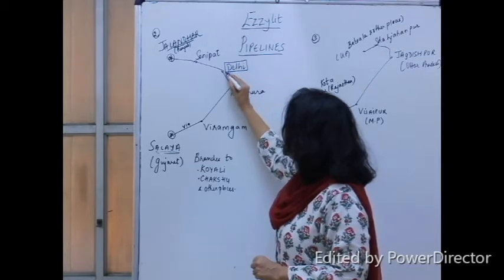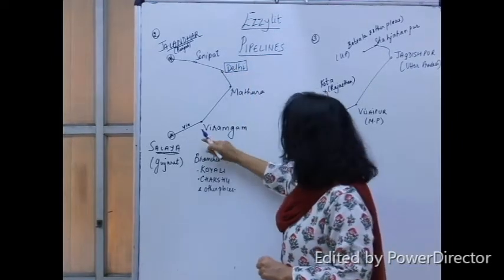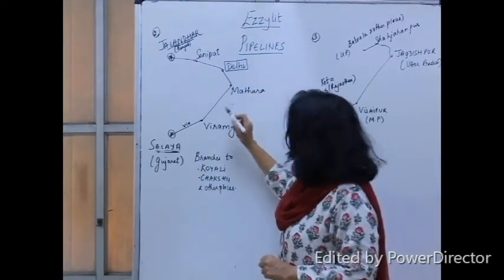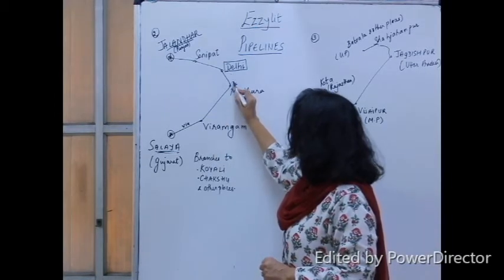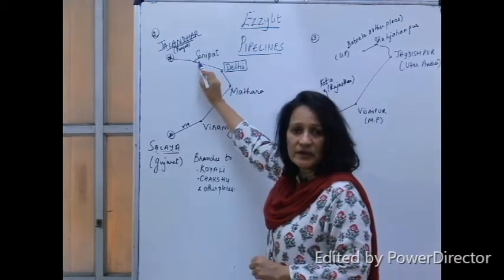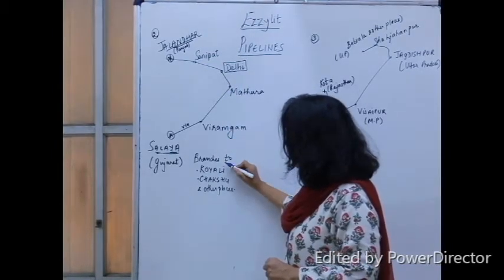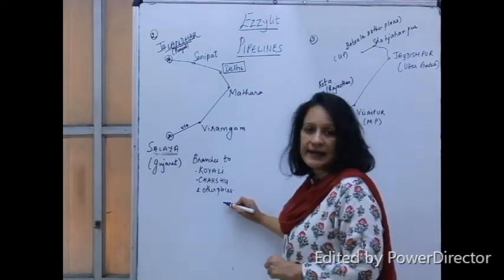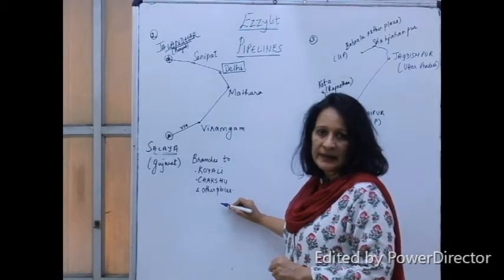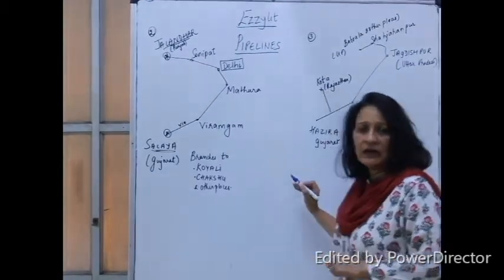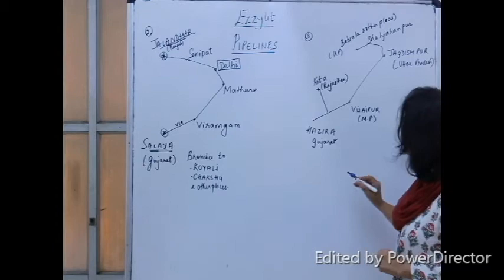That is via Virangam, Mathura, Delhi, and Sonipat. Delhi is the third, and then branches to Koyali, Chakshu, and other places.